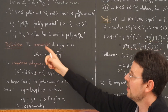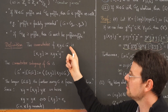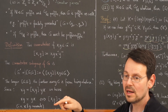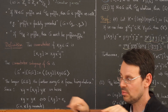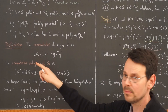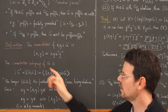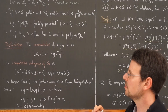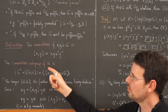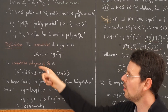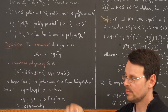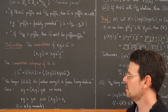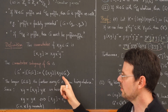So G is a group. We define the commutator of two elements of this group to be the expression [x, y] = xy x⁻¹ y⁻¹. The commutator subgroup of G is the subgroup generated by all the commutators. So I take all the commutators, put them in a set, and then take the smallest subgroup containing all of them — the subgroup generated by all the commutators.